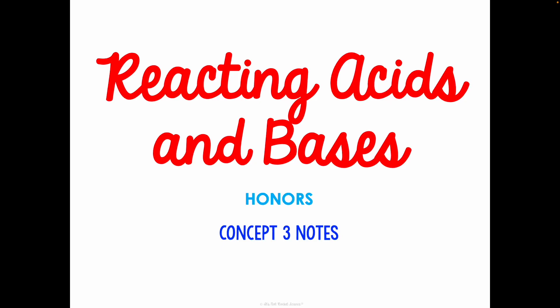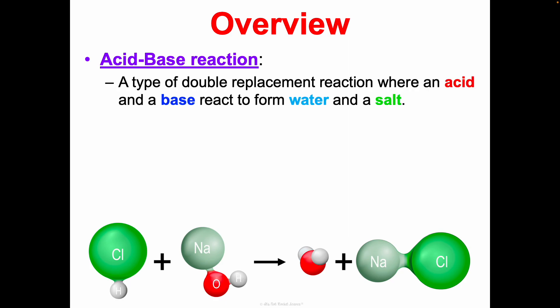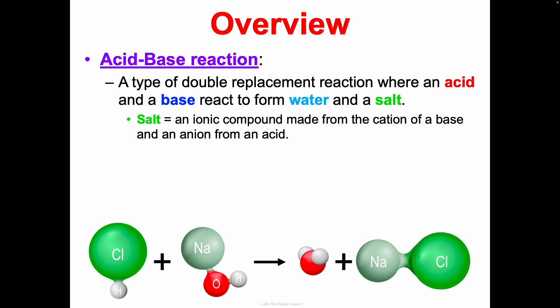This is concept three notes and we're going to talk about reacting acids and bases. We were first introduced to this in unit five on chemical reactions as a type of double displacement or double replacement reaction, and then again in concept one notes of this unit. Acid-base reactions are a type of double replacement reaction where you have an acid and a base reacting to form water and a salt.